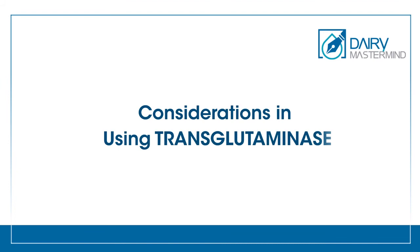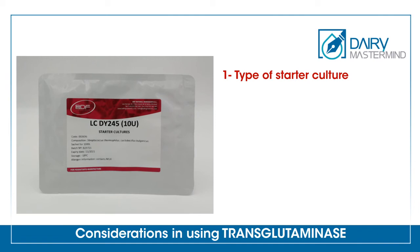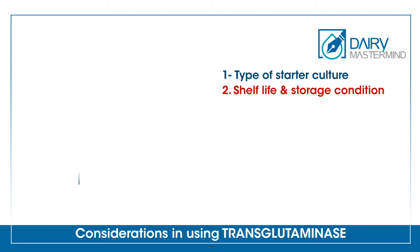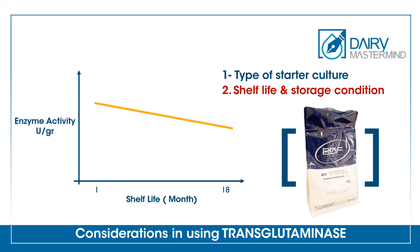Considerations in using transglutaminase: To achieve the best results, the following points should be considered. Regarding type of starter culture: transglutaminase enzyme is compatible with most codes of starter culture, but works more effectively with some of them. To reach the best results, it is advised to use EPS — exopolysaccharide-producing starter culture with TG enzyme. Because TG enzyme gradually loses its activity over time, pay attention to the enzyme's shelf life.